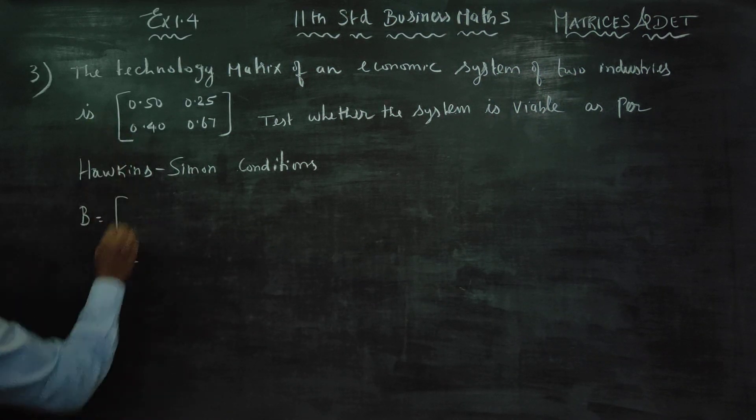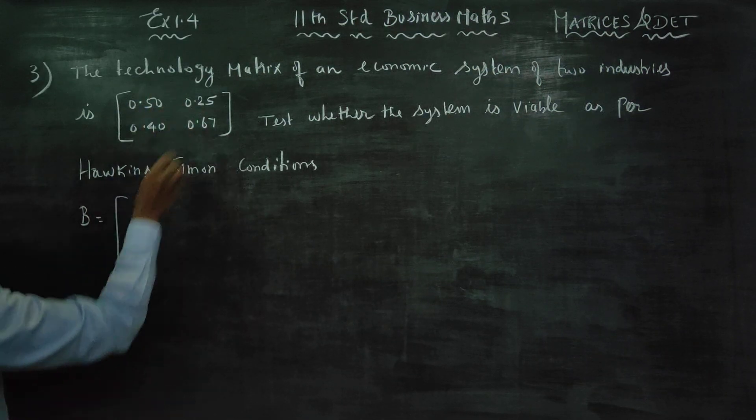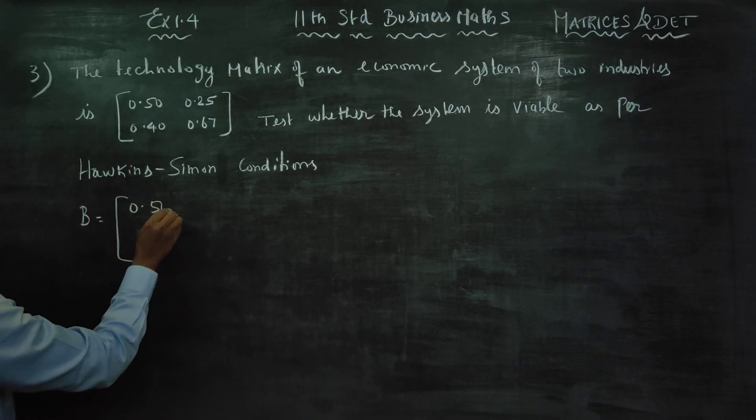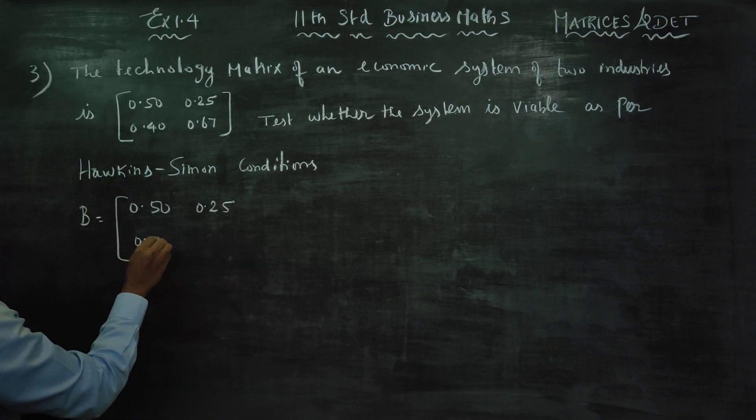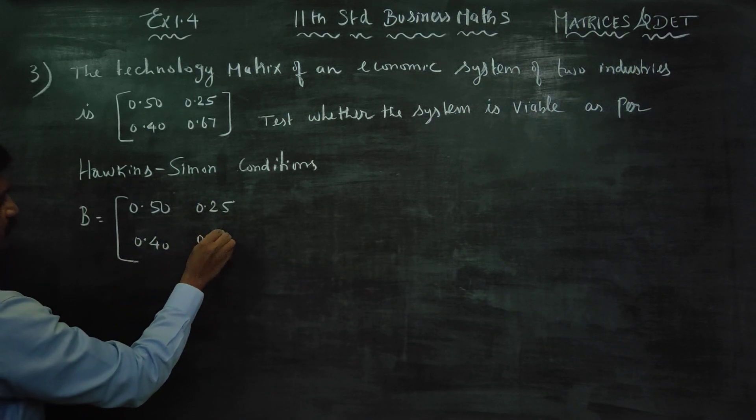Technology matrix of an economic system is [0.50, 0.25; 0.40, 0.67].